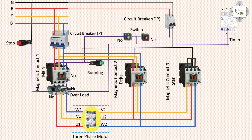NC outlet to timer: NC outlet to pin 7 and pin 8 number terminal connection. Pin 7 is timer coil connection, pin 8 is common terminal. Neutral common to pin 2 connection — coil 2 and pin 7 timer coil connection.